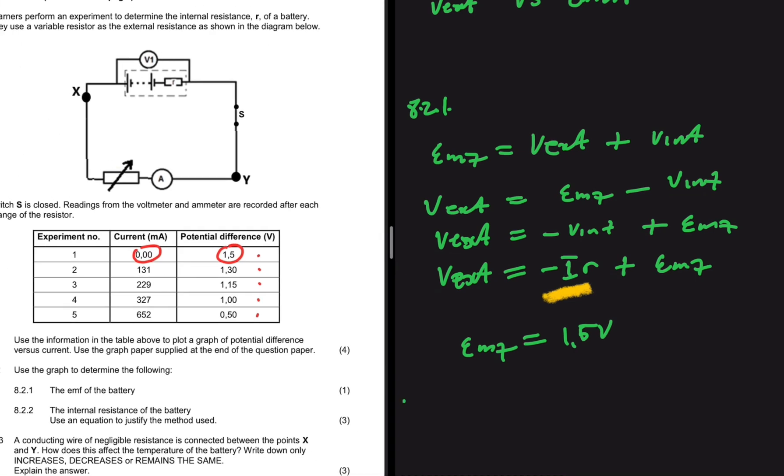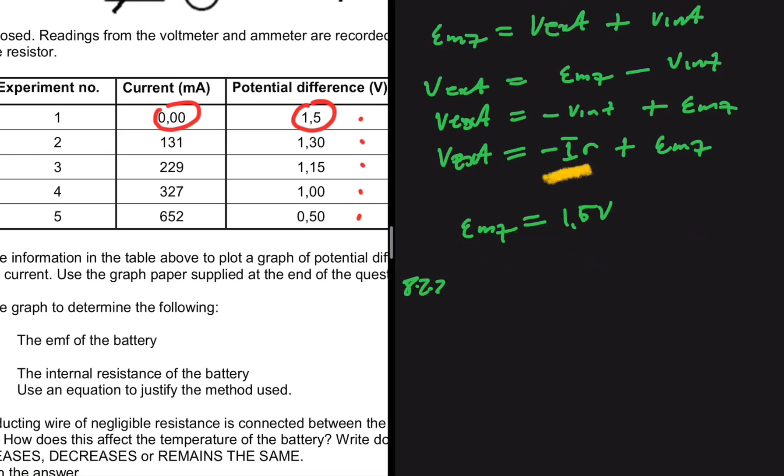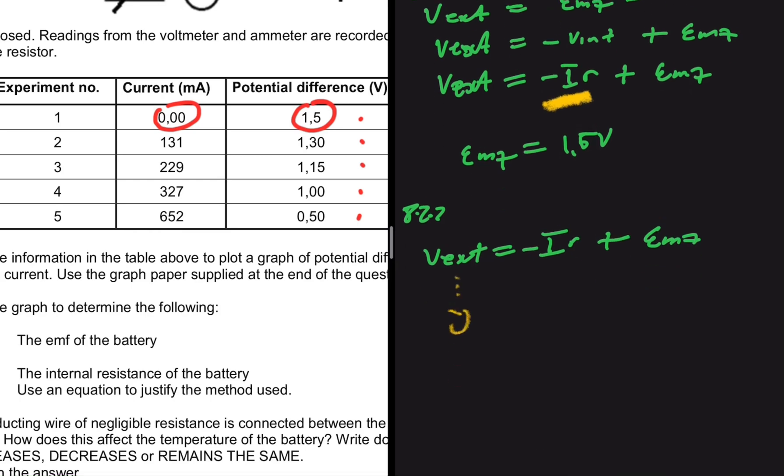8.2.2: Determine the internal resistance of the battery. Use an equation to justify the method used. Which equation are we supposed to use? We have already deduced that V external equals negative I multiply by r plus emf. It's easy to see that V external is our y and the current is x, so our gradient should be negative r. To find the gradient, we actually have to calculate the gradient of the graph using the five experiments we have.